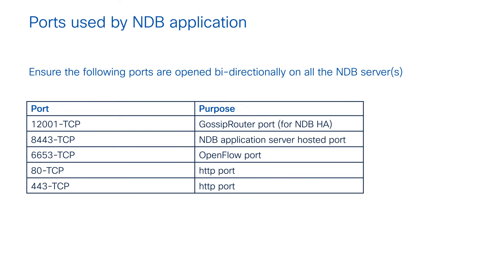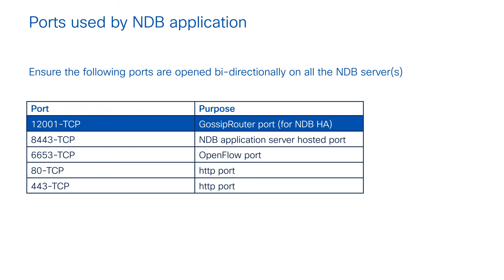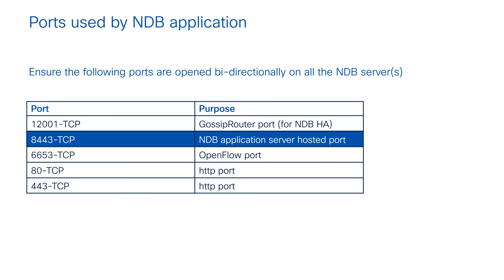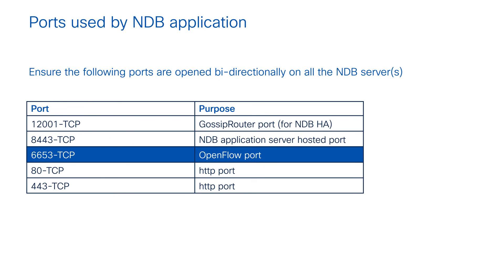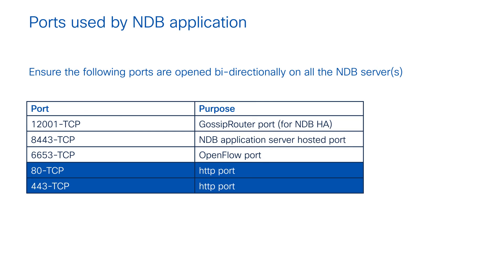For TCP and UDP ports used by the NDB application, these ports are recommended to be opened bi-directionally on the firewall. Port 12001 is the gossip router port (TCP), which is crucial for NDB in HA mode. Port 8443 is where the NDB web server runs and is important for accessing the web page. Port 6653 (TCP) is the OpenFlow port used by the controller to manage switches in OpenFlow mode. TCP 80 and TCP 443 are HTTP and HTTPS ports used when the controller manages NDB boxes over HTTP or HTTPS with SSL.